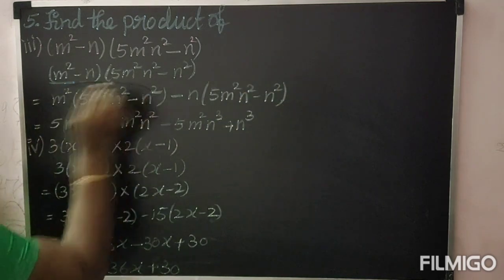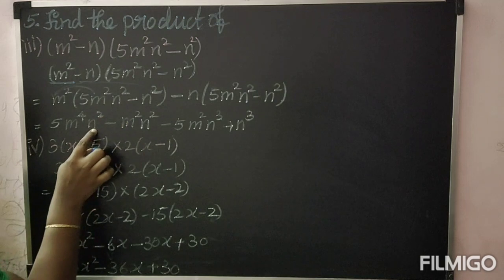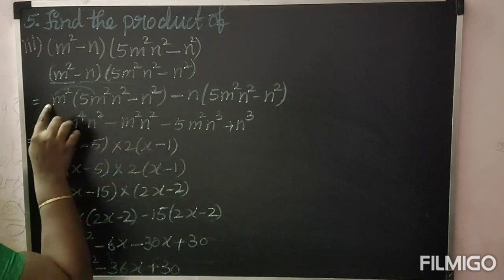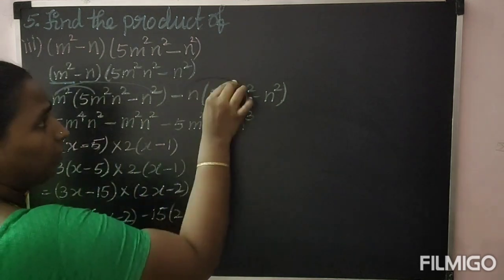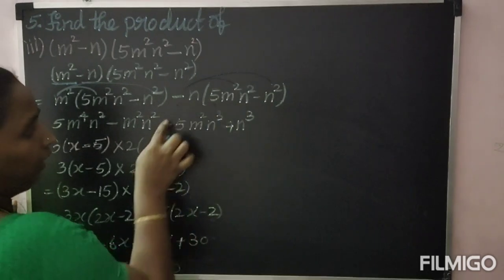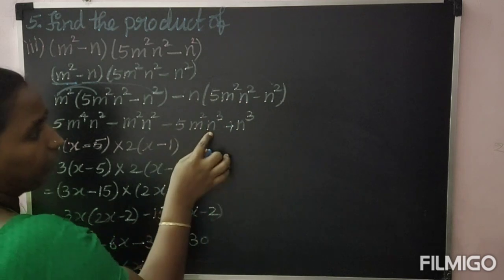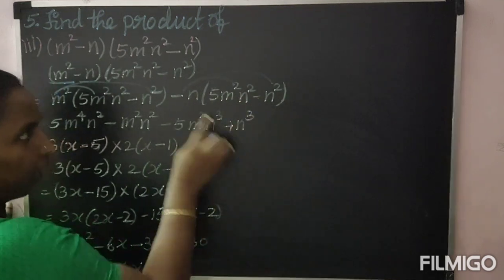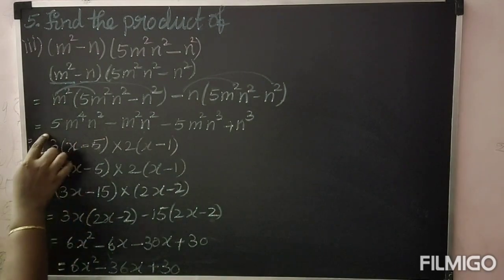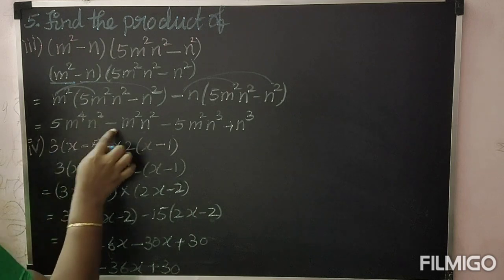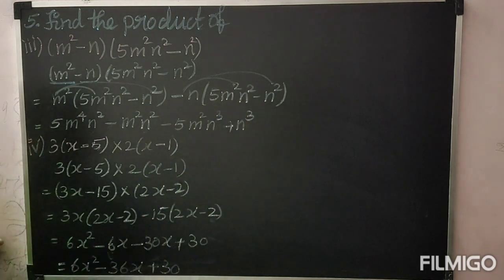Now multiply each term: m² into 5m²n² gives 5m⁴n²; plus into minus gives minus m² into n² gives minus n⁴. Next multiply with minus n: minus n into 5m²n² gives minus 5m²n³; minus into minus gives plus n into n² gives plus n³. The answer is 5m⁴n² − n⁴ − 5m²n³ + n³.